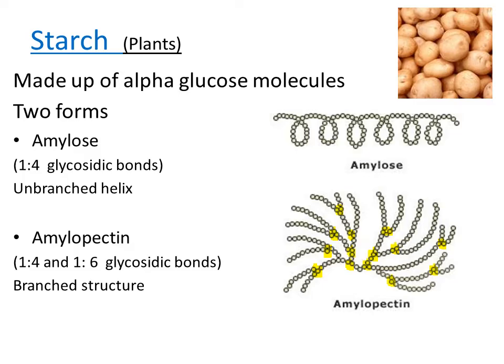Starch is a very large molecule — it's a polymer of alpha glucose molecules and it is joined together in two different forms. The first form is amylose. Amylose is created by bonding the glucose molecules together by one-to-four glycosidic bonds, meaning the first carbon of one glucose molecule is bonded to the number four carbon of the next.